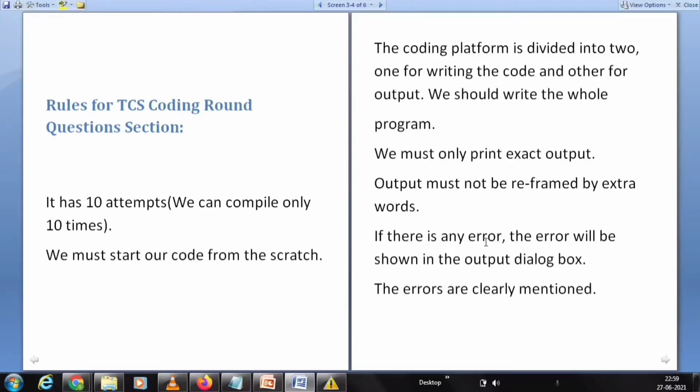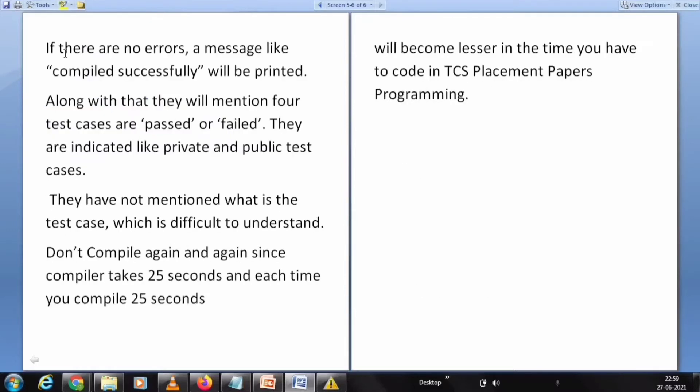If there is any error, the error will be shown in the output dialog box. The errors are clearly mentioned. If there is no error, a message like 'compiled successfully' will be printed. Along with that, they will mention four test cases as passed or failed. They are indicated as private and public test cases. They have not mentioned what is the test case, which is difficult to understand. Don't compile again and again since the compiler takes 25 seconds and each time you compile, 25 seconds will become less in the time you have to code in TCS placement programming.